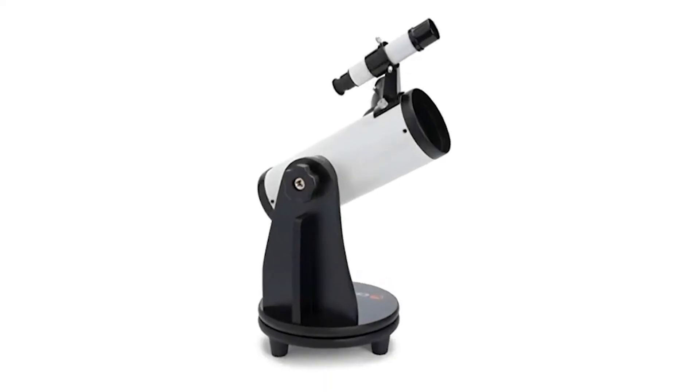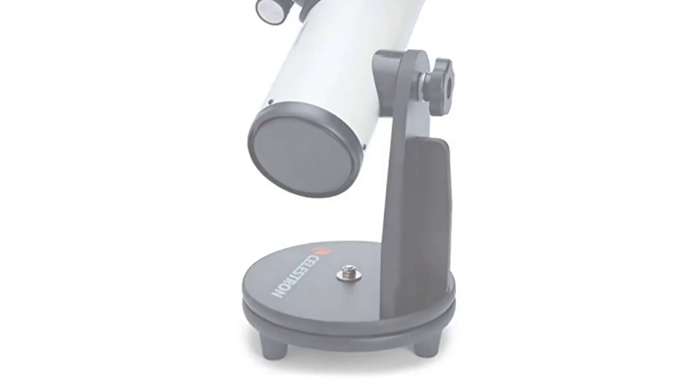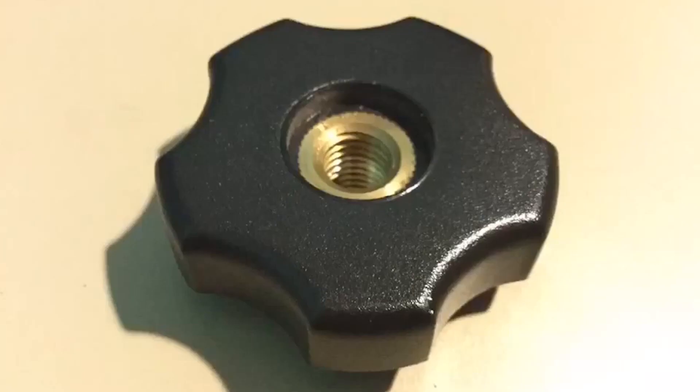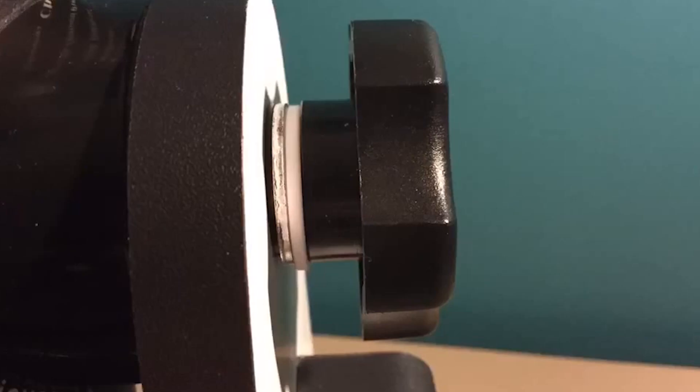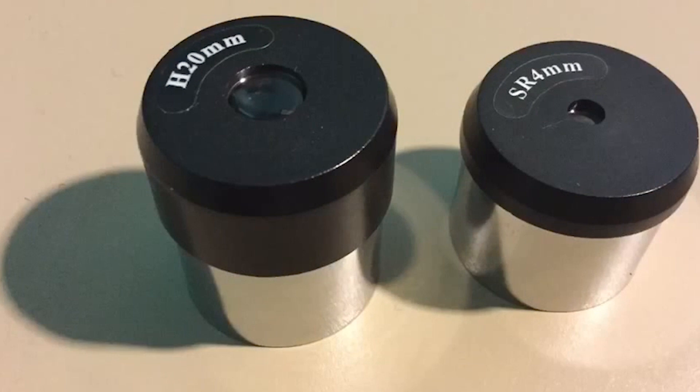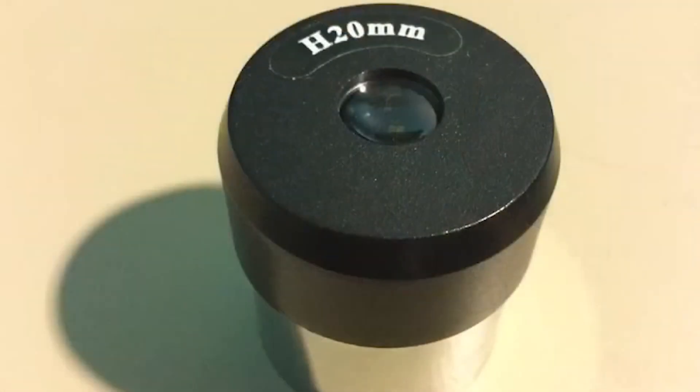3. Celestron 21023 Cometron First Scope. The Celestron 21023 Cometron First Scope is a popular choice for beginners, and with a wide field of view, it is commonly used to observe galaxies, star clusters, and comets. It features a lightweight, portable design, and since it is easy to use, it is a top pick for beginner astronomers.